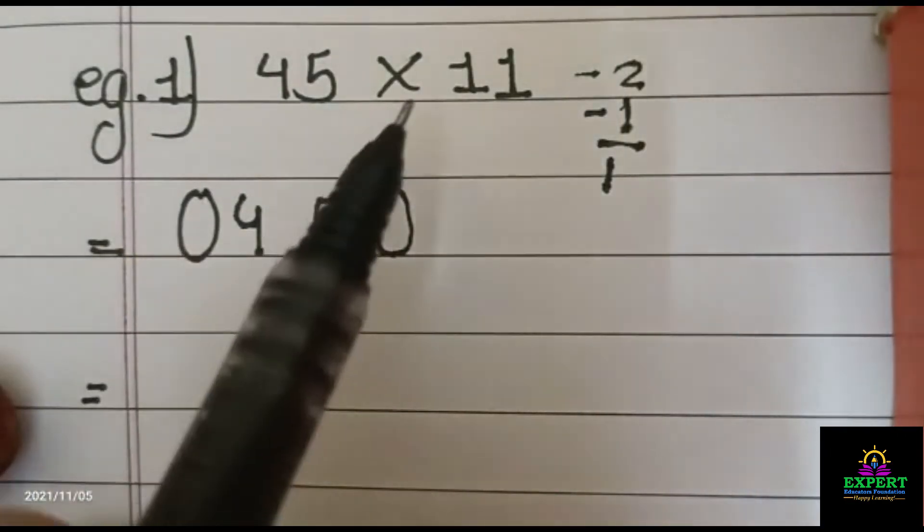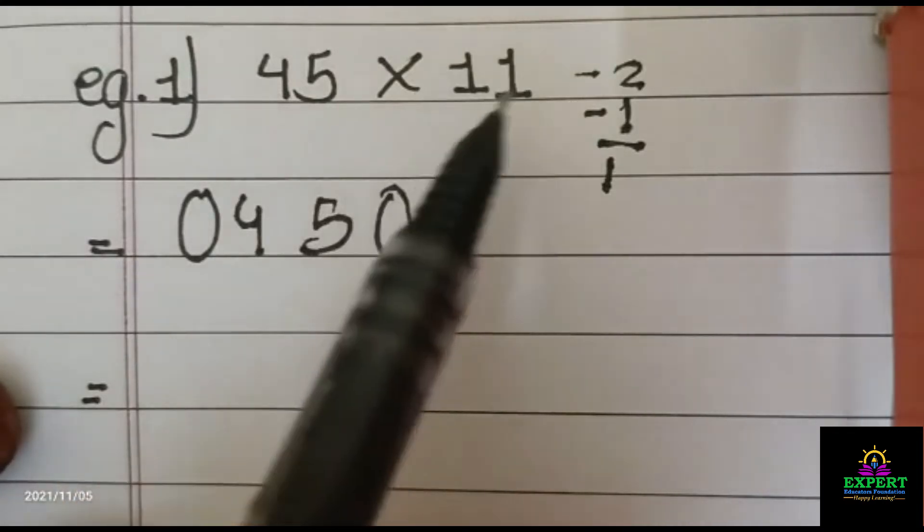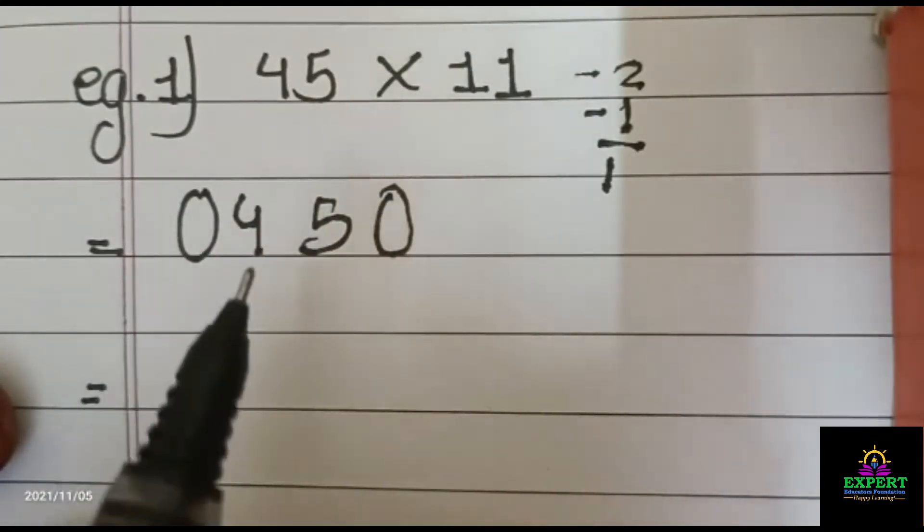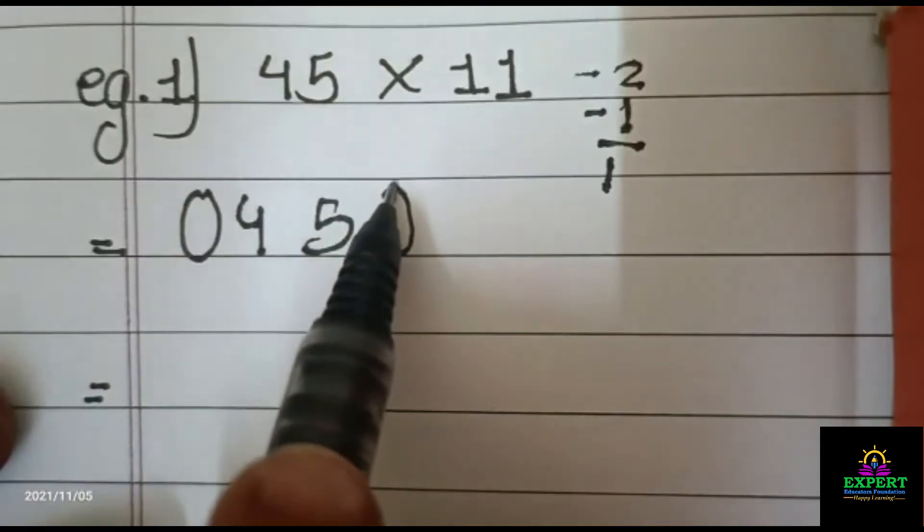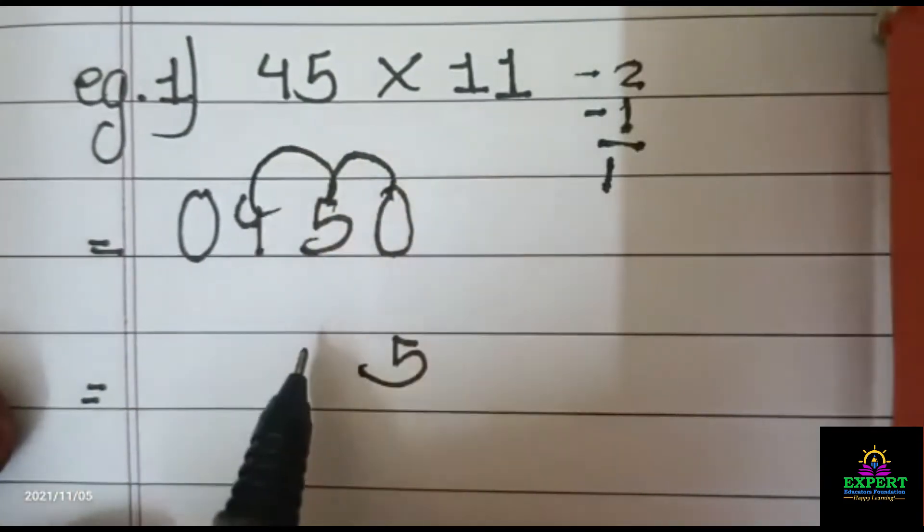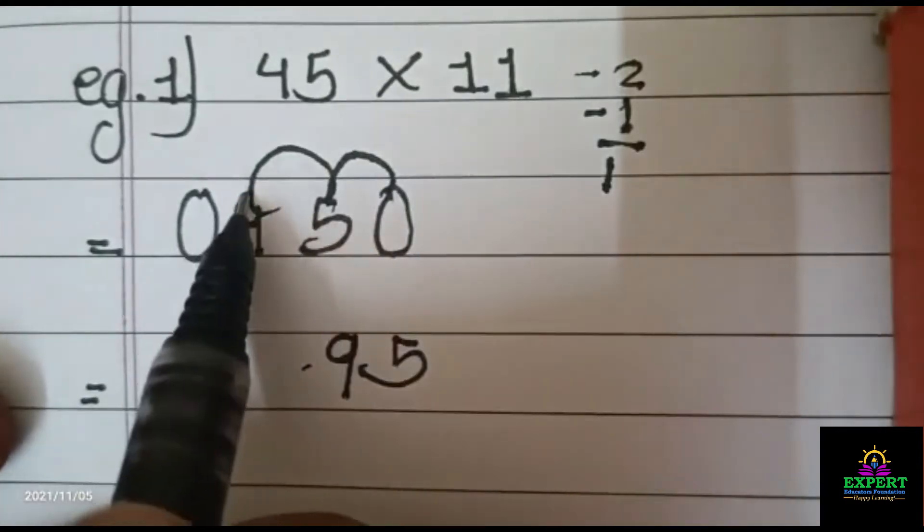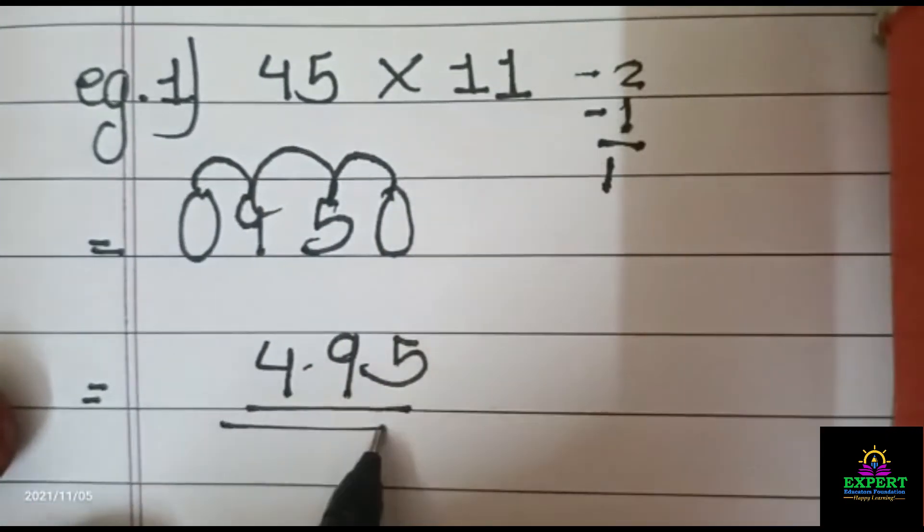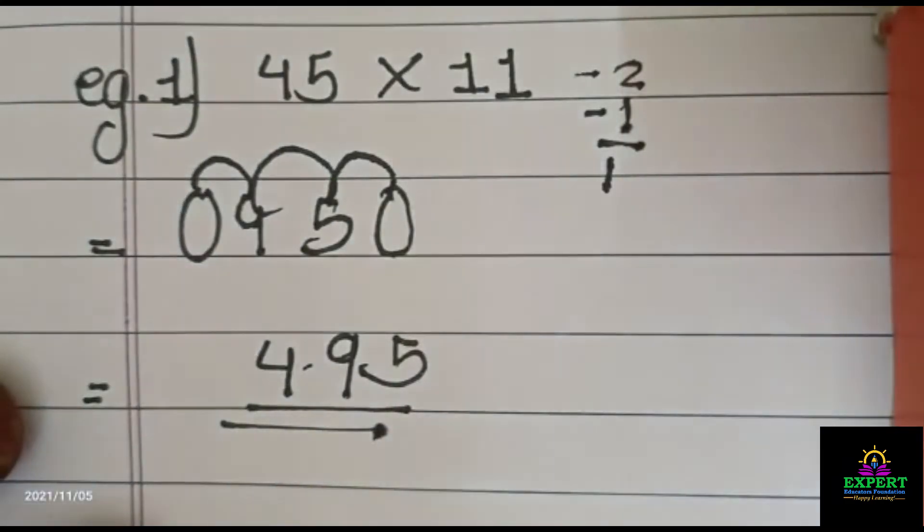And now I will add these numbers. But how will I add? Now here is 11, 2 digits, so I will add these numbers by 2, 2 digits. So 0 plus 5 is 5, 5 plus 4 is equal to 9, and 4 plus 0 is equal to 4. Now your answer is 495.